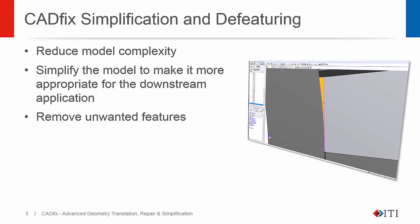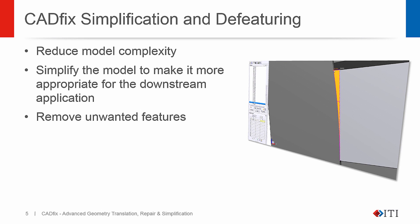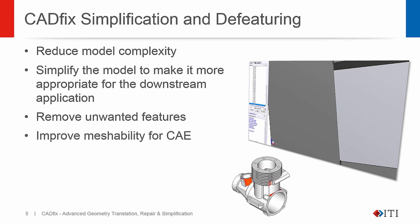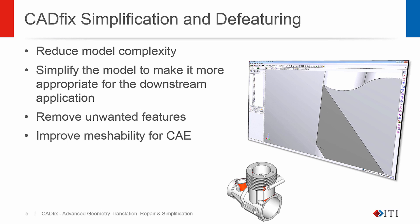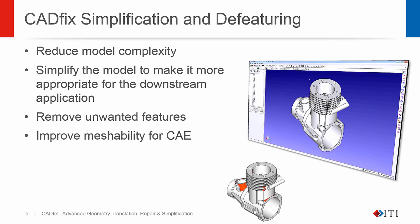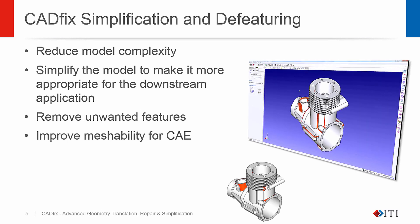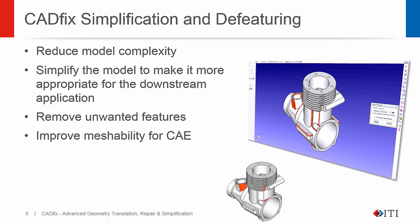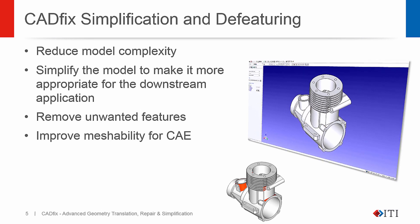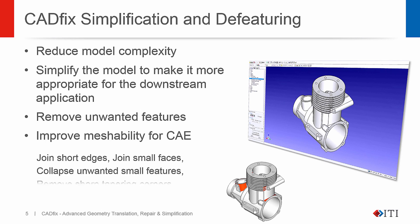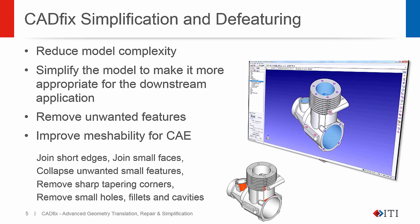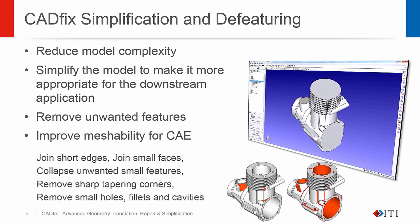CAD models may need de-featuring for CAE applications to give a more meshable model with improved mesh quality and analysis results. Or complex CAD assemblies of large equipment installations may need significant simplification for use in process plant design systems. The large suite of CADFIX de-featuring tools enable users to collapse, join, or simply remove any unnecessary detail as part of the translation process.